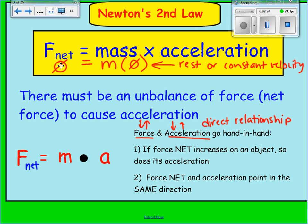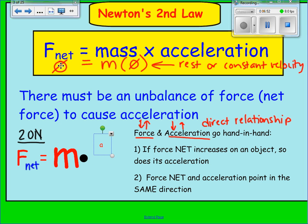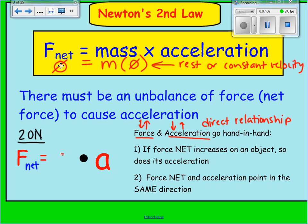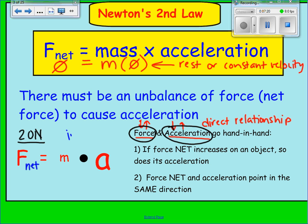Now, what if the mass could change? If I keep a net force of 20 newtons constant and the mass gets bigger, the acceleration would have to get smaller to maintain that mathematical relationship. If the mass gets smaller, the acceleration would have to get bigger to keep the force constant. So while force and acceleration have a direct relationship, mass and acceleration have an inverse relationship — as one gets bigger, the other gets smaller.